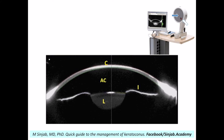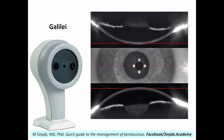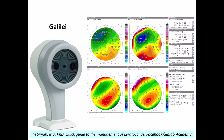This Scheimpflug camera is integrated into the three topographers, but it is a single Scheimpflug camera in the PENTA-CAM, while there are two opposing Scheimpflug cameras in the Galilei. The other difference in the Galilei is that there is a Placido disk. Many studies were done to compare the Galilei with the PENTA-CAM, and those studies concluded that the data were interchangeable between the two machines. This means we can apply all the parameters and values mentioned in the previous videos to the maps obtained by the Galilei.